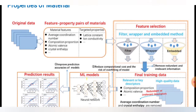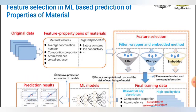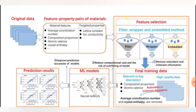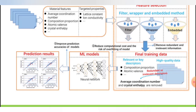Original data is given. The feature-property pairs of materials require material features and targeted properties — what we want and what we have. Features include: average coordination number, composition proportion, atomic valence, crystal enthalpy. Target properties include lattice constant and ion conductivity. Feature selection is applied using filter, wrapper, and embedded methods to obtain the final training datasets.